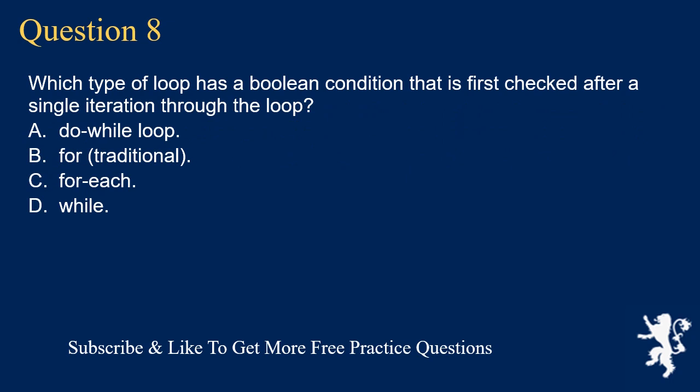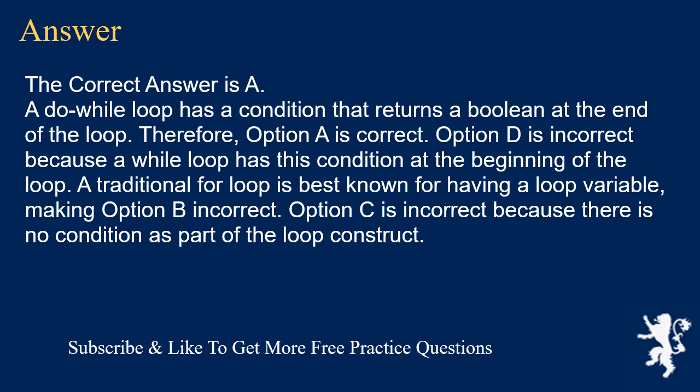Question 8. Which type of loop has a boolean condition that is first checked after a single iteration through the loop? A. Do-while loop. B. For traditional. C. For each. D. While. The correct answer is A. A do-while loop has a condition that returns a boolean at the end of the loop. Option D is incorrect because a while loop has this condition at the beginning. A traditional for loop is best known for having a loop variable, making option B incorrect. Option C is incorrect because there is no condition as part of the for-each loop construct.